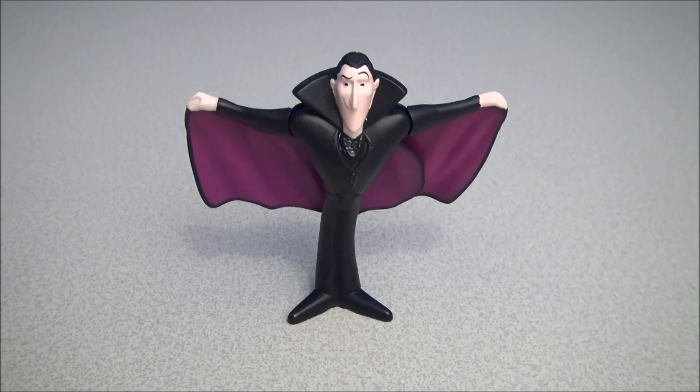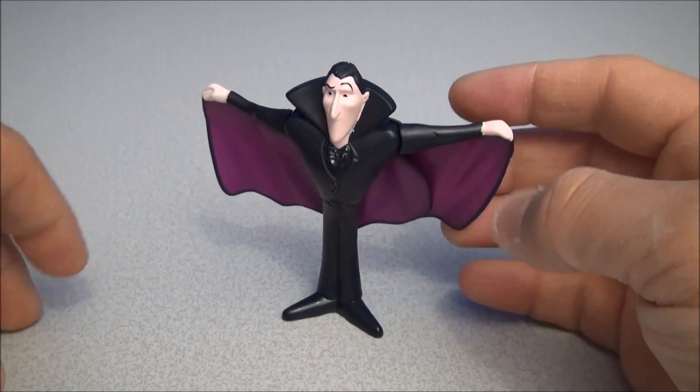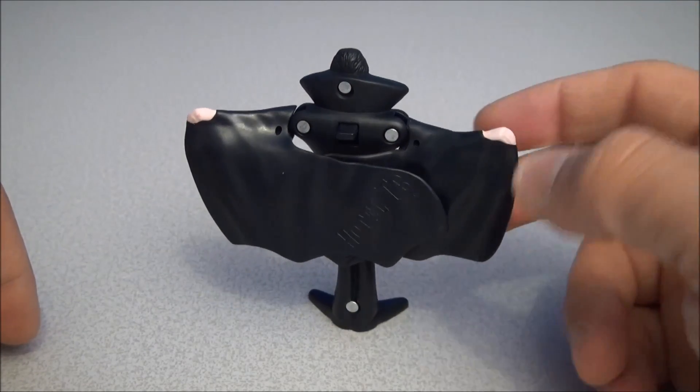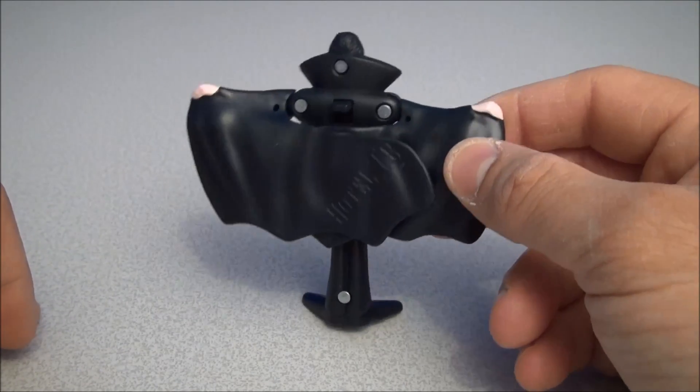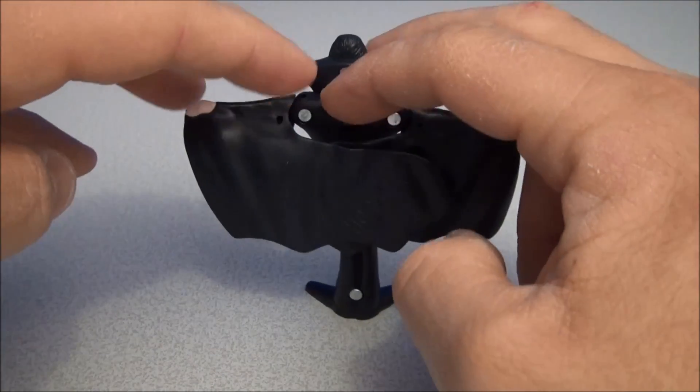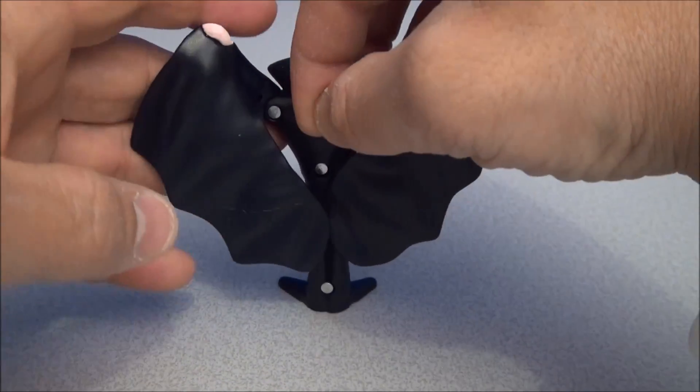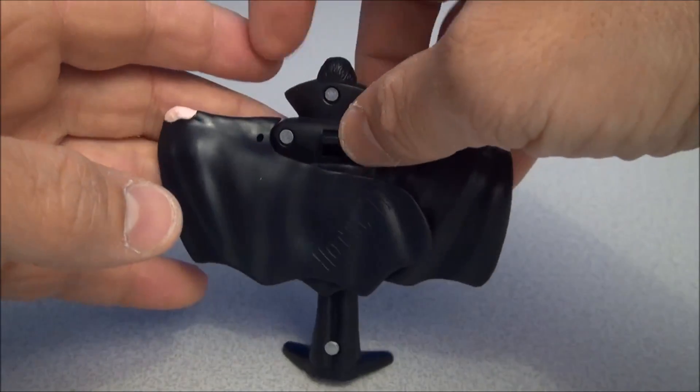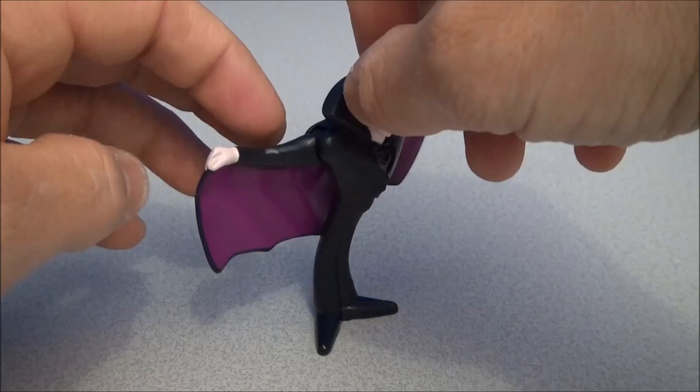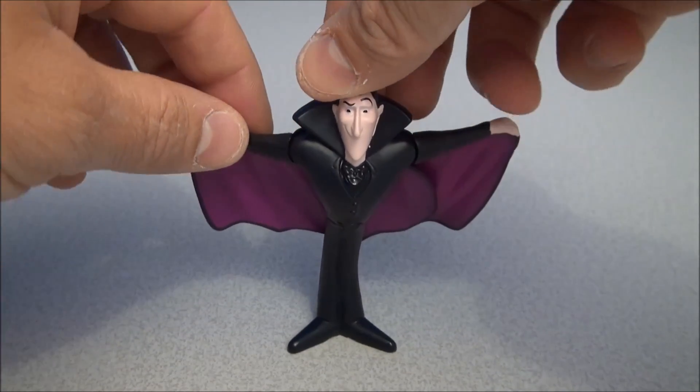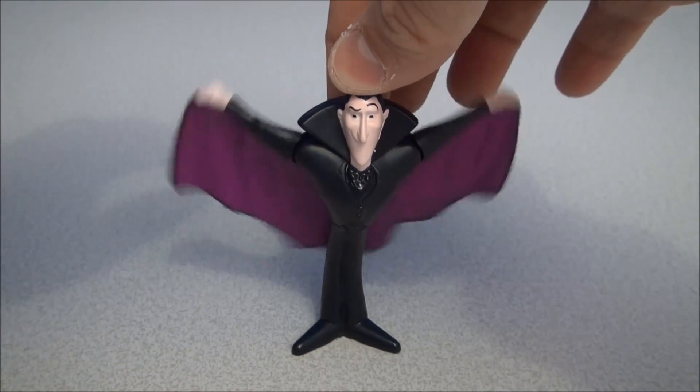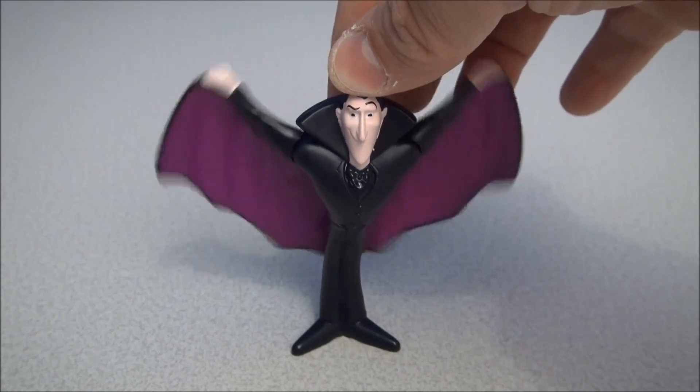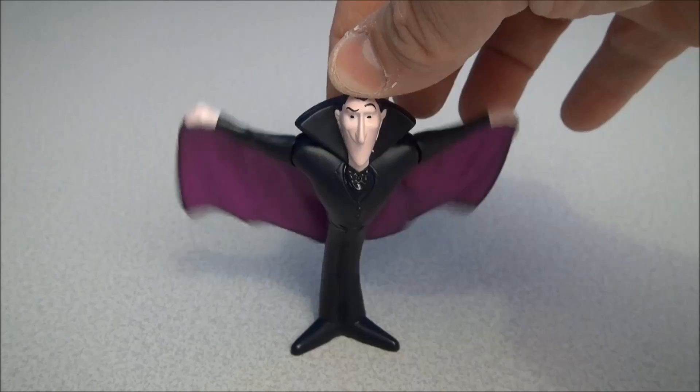First up in the set we have Cape Flappin' Drac. So Drac is a vampire and it says Hotel Transylvania on the back there. If you look there's half of it and if you push down on this you will see the whole thing when it's fully extended which is kind of neat. What you want to do is hold him by the top of the head and you flap the cape. I don't know why that's completely amusing me.